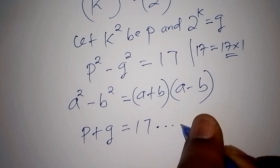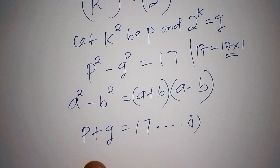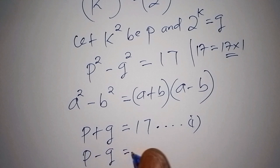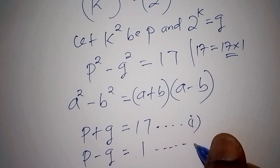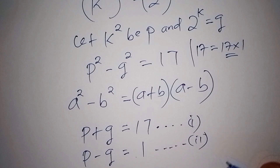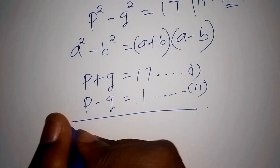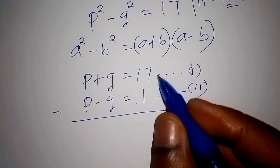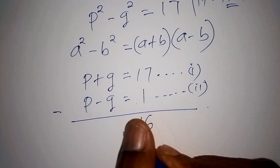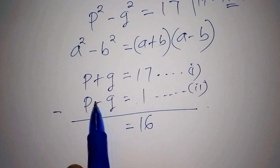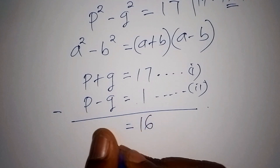So our first equation is p plus q equals 17. Our second equation is p minus q equals 1. From there we can work the equations out by subtracting. So 17 minus 1 gives us 16, which equals plus q minus negative q, giving us 2q.